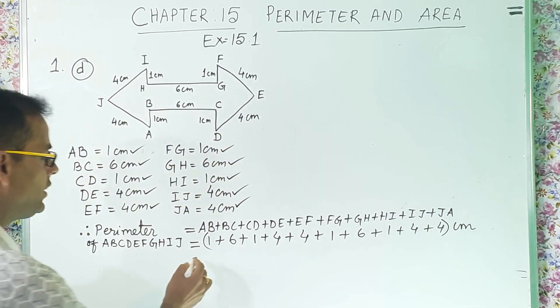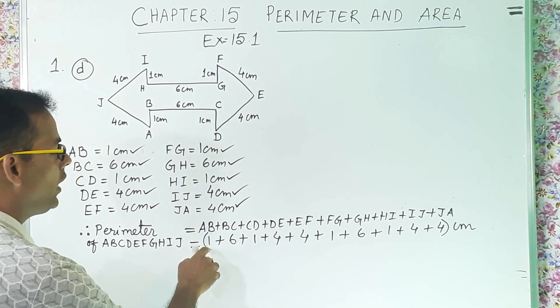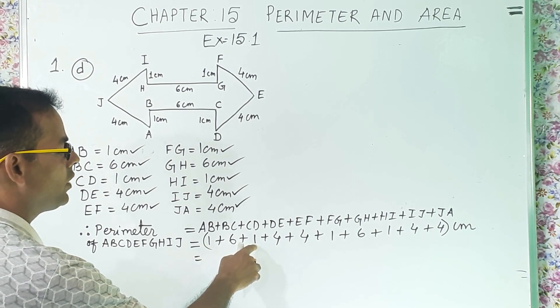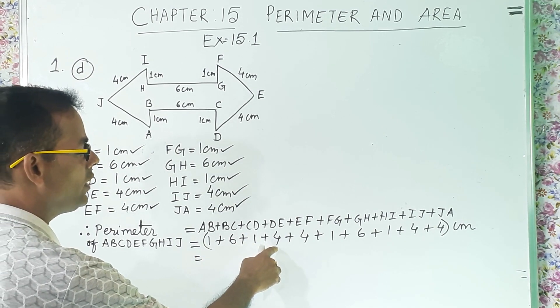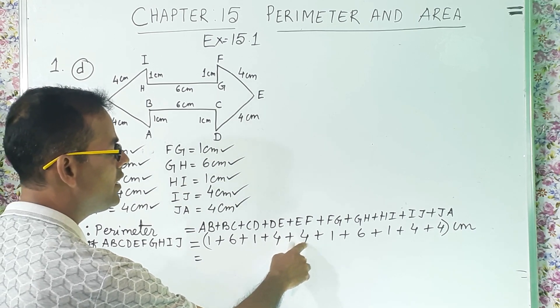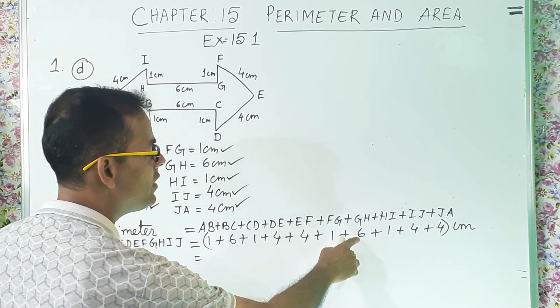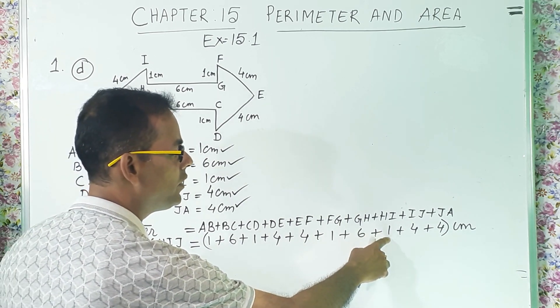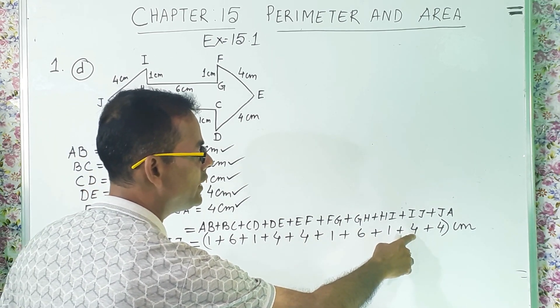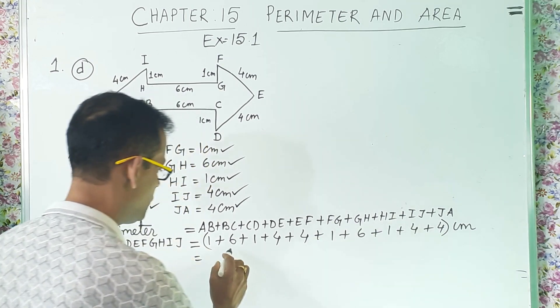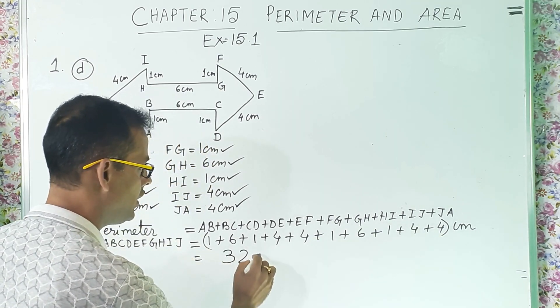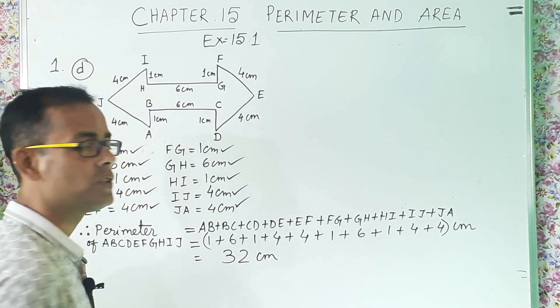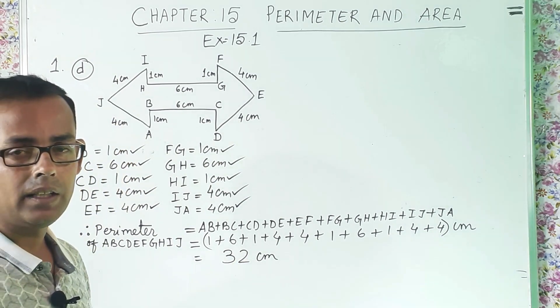Now, we will add it. So, 1 plus 6, 7, 7 plus 1, 8, 8 plus 4, 12, 12 plus 4, 16, 16 plus 1, 17, 17 plus 6, 23, plus 1, 24, 28, 32. So, we got the answer, 32 centimeter.